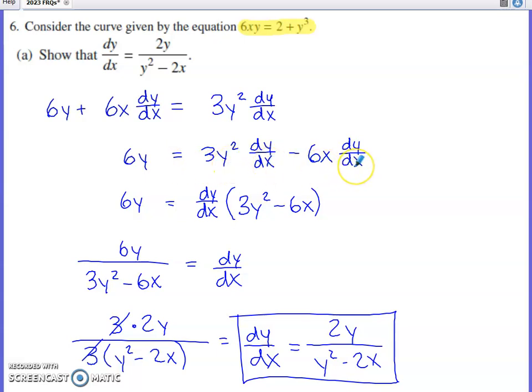I can then take dy/dx out as a common factor, and then I can divide by this set of parentheses in order to isolate dy/dx. If you look at what we're trying to show dy/dx is equal to, it's not this. We need a 2 as the coefficient of the Y in the numerator, a 1 in front of the Y squared, and a 2 as the coefficient of the X in the denominator. So I realized I can factor 3 from the top, I can factor 3 from the bottom, and after I cancel those 3s, I've shown that dy/dx is what they wanted me to show it was.